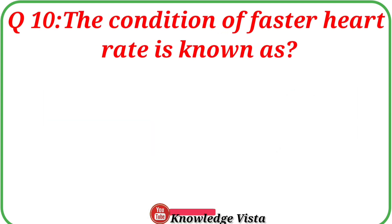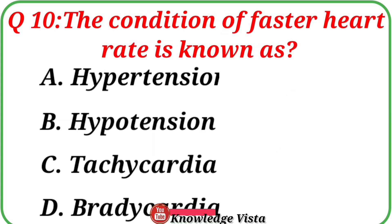Question No. 10. The condition of faster heart rate is known as. Your options are: A. Hypertension, B. Hypotension, C. Tachycardia, D. Bradycardia.